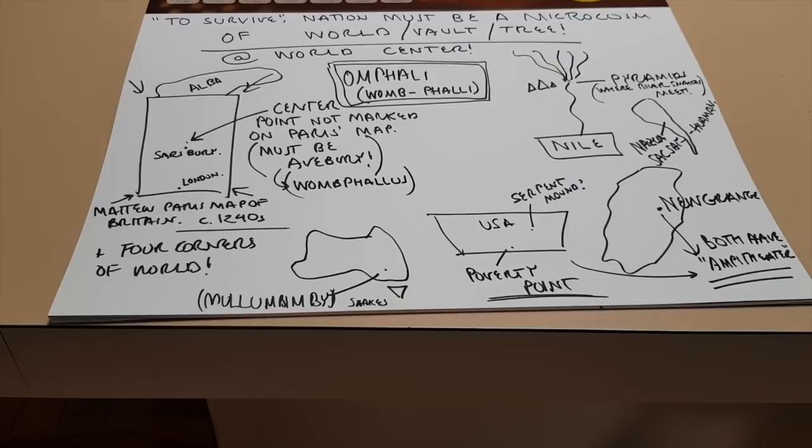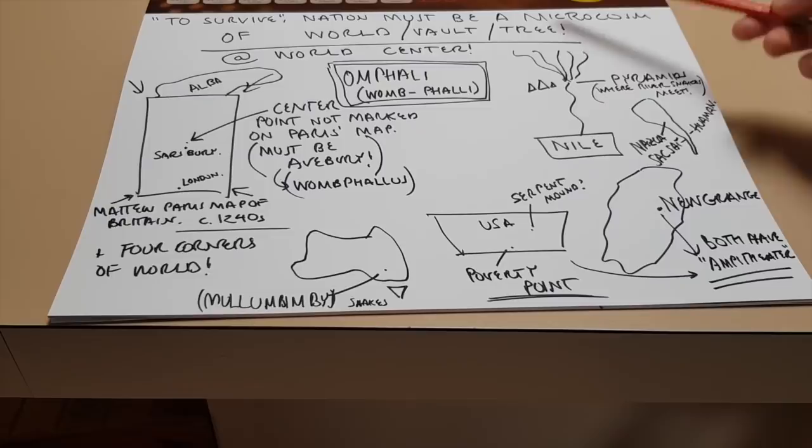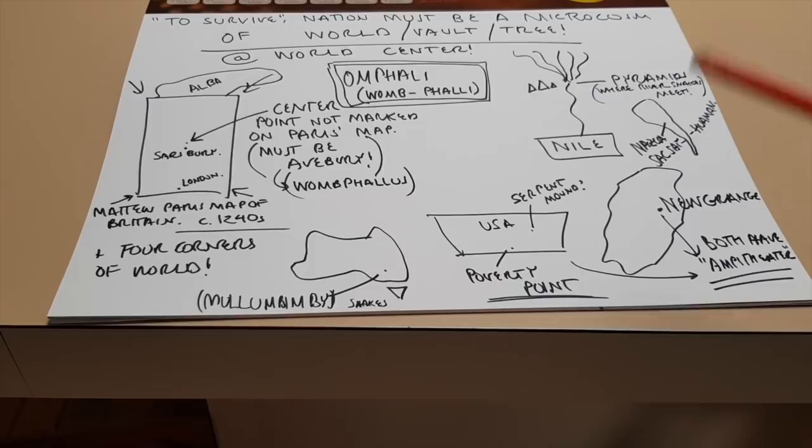So therefore, a cross, the origin of the cross is explained in the Stone Ages. And therefore, the Celtic cross is kind of similar. Is it again four elephants and therefore the Staff God, another pyramid type representation? Now, it seems in the Stone Age world, it was thought that to survive as above, so below. So a nation, a country, must be a microcosm of the world slash vault slash tree. It's all the same thing, isn't it? Therefore, a country had to have a world center or it was not a country.